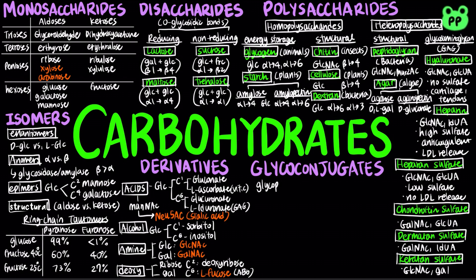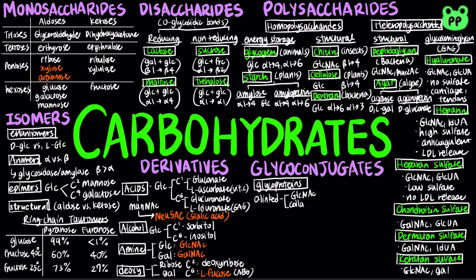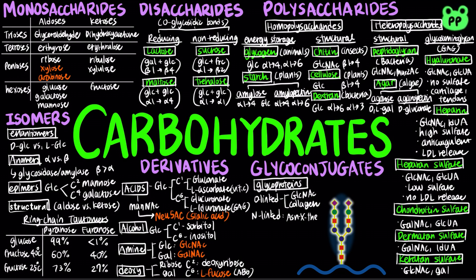Glycoproteins are oligosaccharides covalently linked to proteins. They are found on the outer surface of the plasma membrane, extracellular matrix, and blood, as well as in the Golgi apparatus, secretory granules, and lysosomes inside the cell. O-linked GlcNAc can function in signaling related to diabetes and cancer. O-linked hydroxylysine and hydroxyproline are found in collagen, the most abundant protein in our body. N-linked glycoproteins usually contain the sequence asparagine, X, serine, or threonine, where X stands for any amino acid except proline. This sequence helps with protein folding.